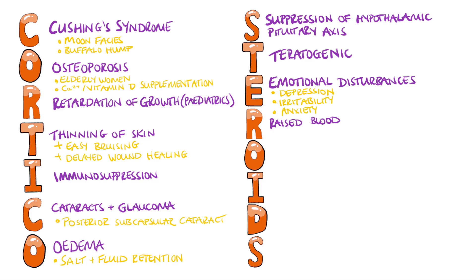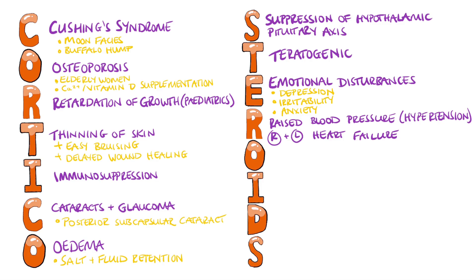R is for a rise in blood pressure, meaning hypertension. R can also help you remember right or left-sided heart failure that can be worsened by corticosteroids due to fluid retention. Our final O is for obesity, specifically central obesity.